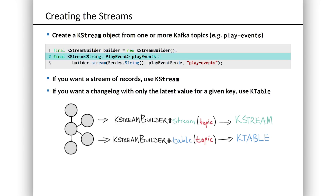Notice that KStream is typed — its key is a string and its value is a play event. Both the key and the value could be any Java type. In this case, we're using Avro to move back and forth between bytes and a Java class. On line three, when we create the stream, we pass in some type hints — we say please use the string Serde for the key and the play event Serde for the value to serialize and deserialize when we're doing IO on this stream.